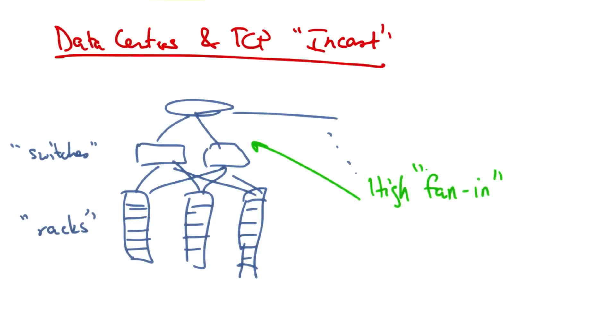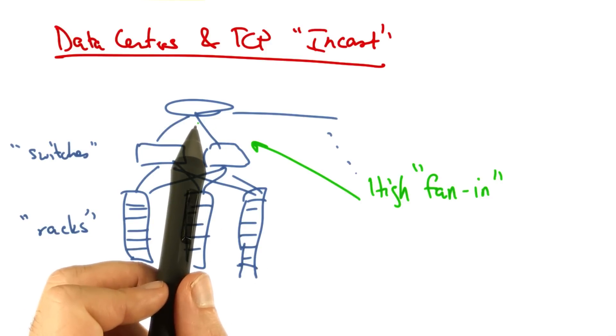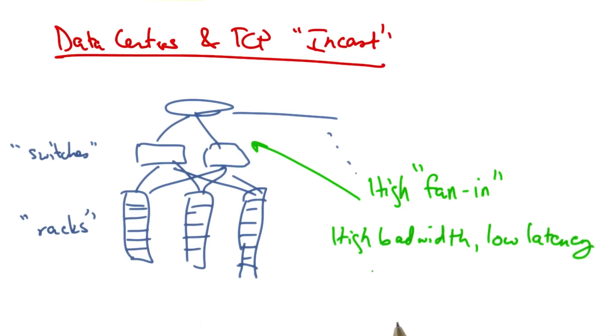Some of the characteristics of a data center network include a high fan in. There is a very high amount of fan in between the leaves of the tree and the top, or the root. Workloads are high bandwidth and low latency, and many clients issue requests in parallel, each with a relatively small amount of data per request.